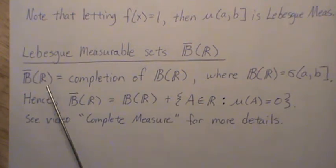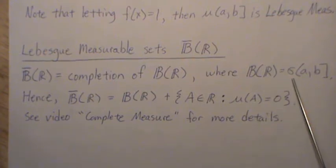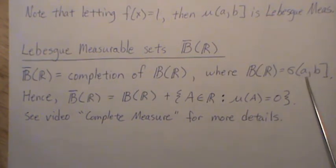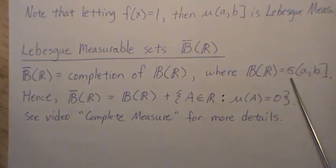𝓑(ℝ) denotes the Borel sets of the real number line. The Borel sets are the sigma field generated from these right semi-closed intervals. It turns out you could put any interval there, but we're in the Lebesgue-Stieltjes measure mindset, so we use the right semi-closed interval.